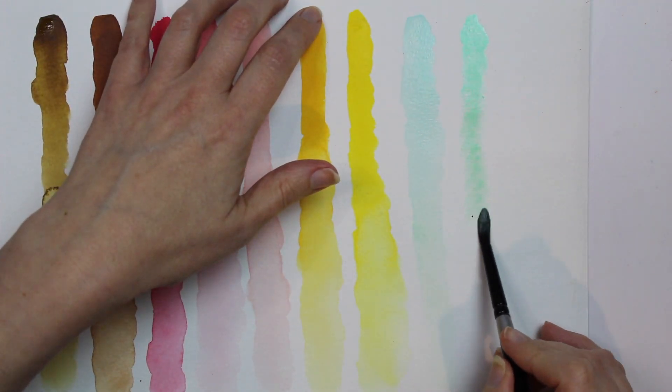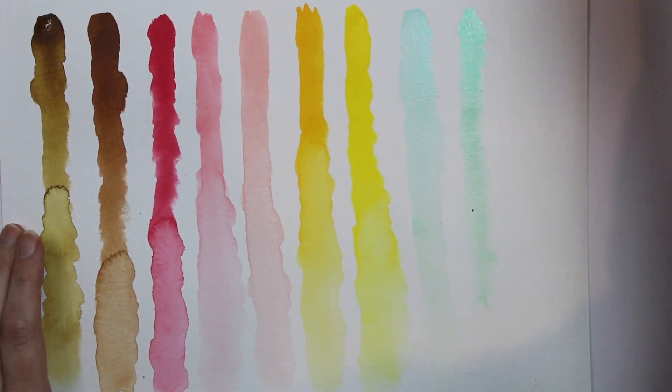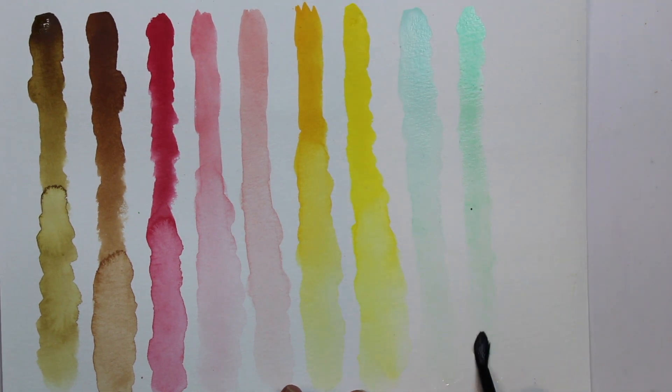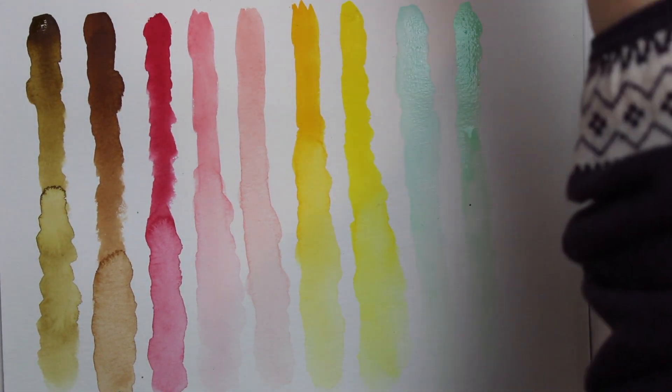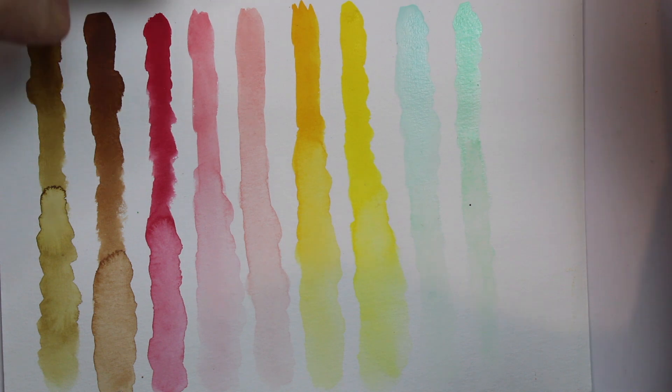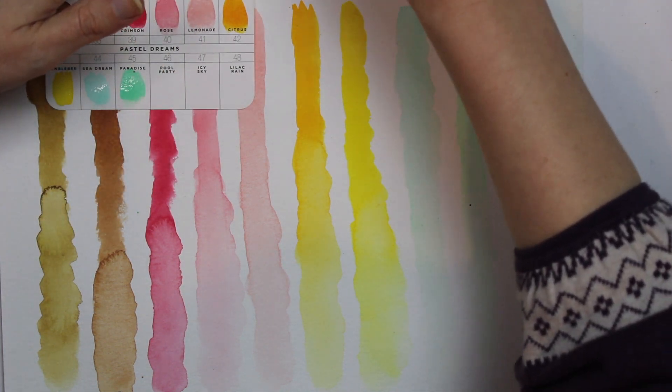The yellow is called Bumblebee, the orange is called Citrus, that pinky flesh tone's called Lemonade. Really fun names for these colours and then we have a pale blue called Icy Sky.